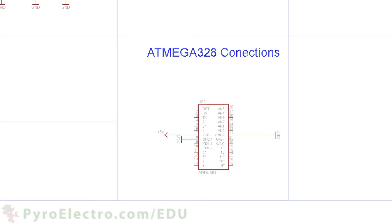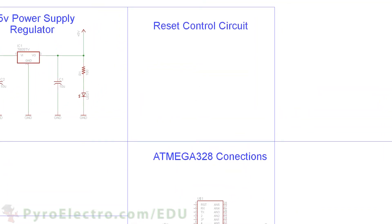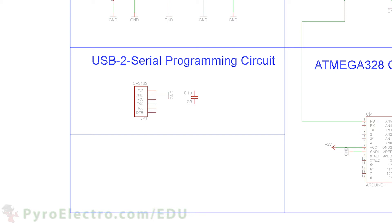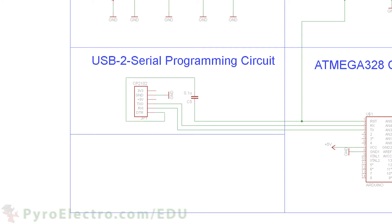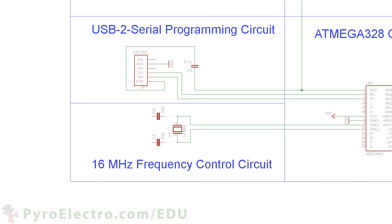The ATmega328 microcontroller connects to plus 5-volt power and ground. The reset circuitry uses a push button that connects to pin 1 of the microcontroller and to ground, and a plus 5-volt pull-up resistor is added to pin 1. The USB to serial converter module connects to the TX and RX pins of the microcontroller, its ground connects to the circuit's ground, and the DTR pin connects to a 0.1 microfarad capacitor that connects to pin 1. The frequency control circuit uses a 16 MHz crystal with two 22 pF capacitors connecting to pins X1 and X2 of the microcontroller.